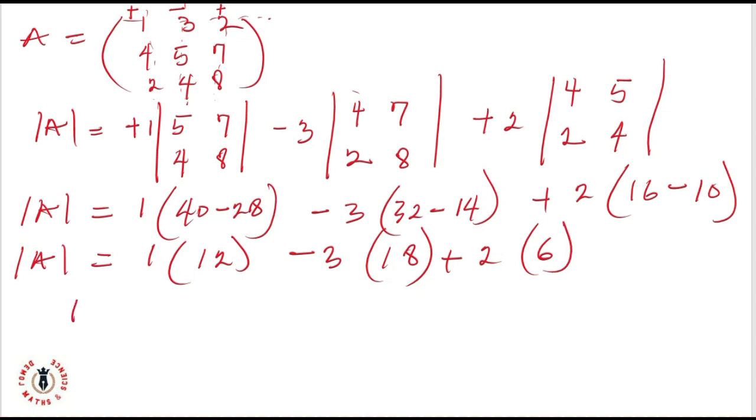So, the determinant of matrix A will come from 1 times 12, that's 12, minus 3 times 18, that's minus 54, and plus 2 times 6, that's plus 12. So the determinant of matrix A will be 12 minus 54, that's minus 42, plus 12. Minus 42 plus 12, that will be minus 30.